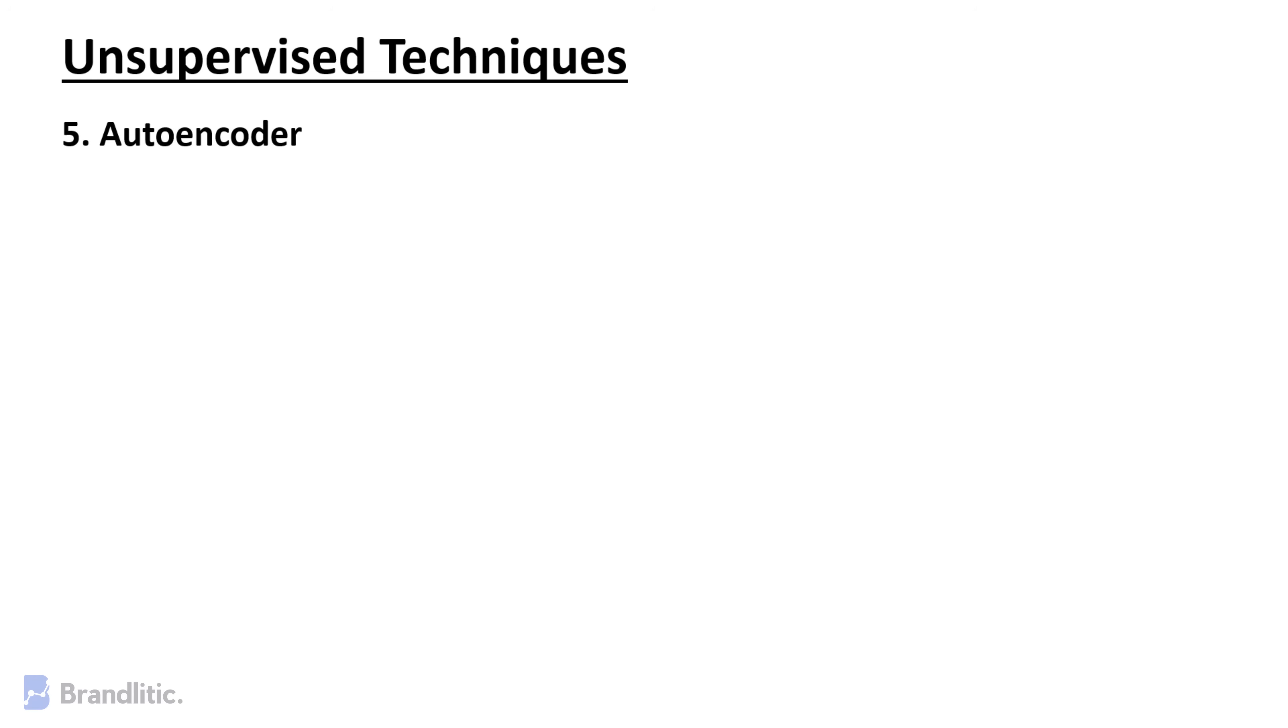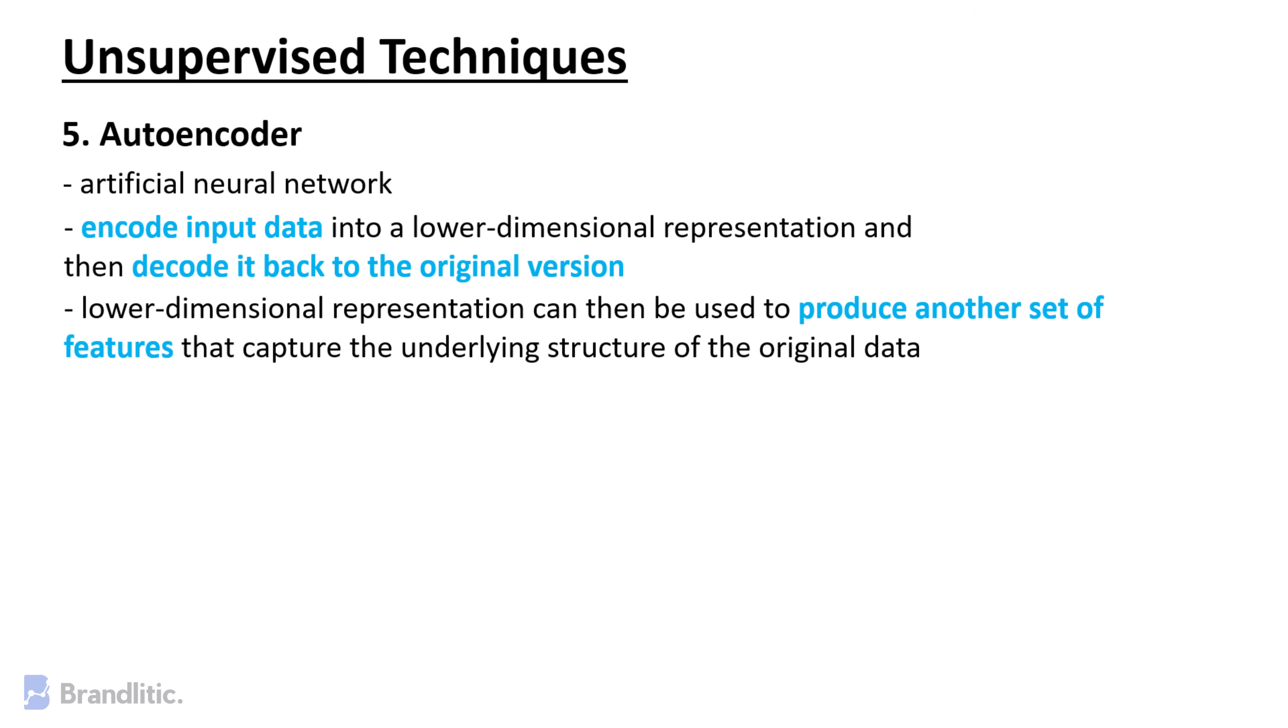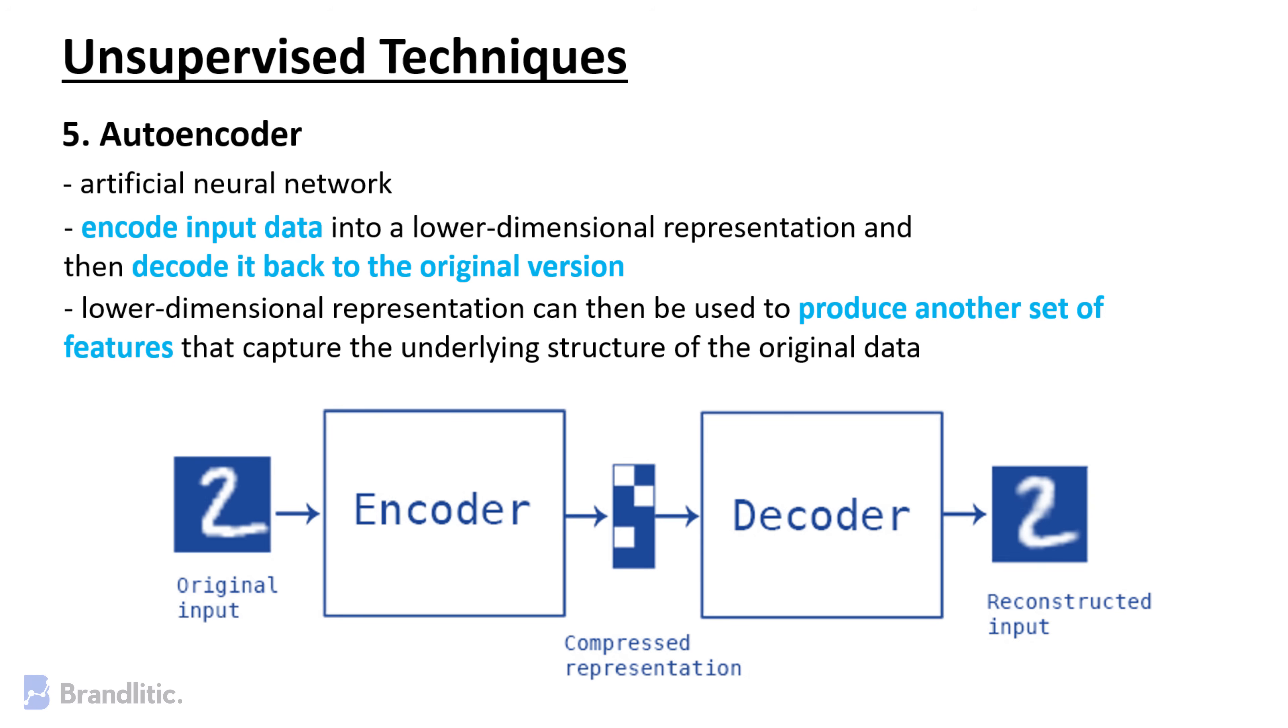Autoencoder. This is the kind of artificial neural network that learns to encode input data into a lower-dimensional representation and then decodes it back to the original version. Autoencoder's lower-dimensional representation can then be used to produce another set of features that capture the underlying structure of the original data.